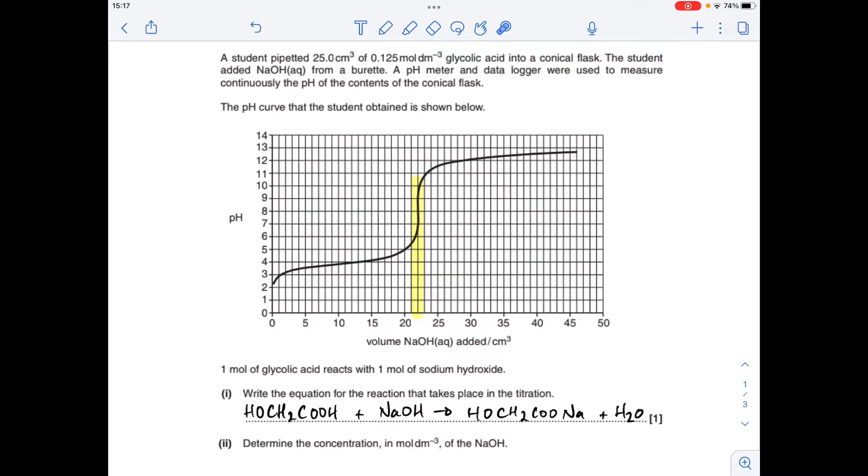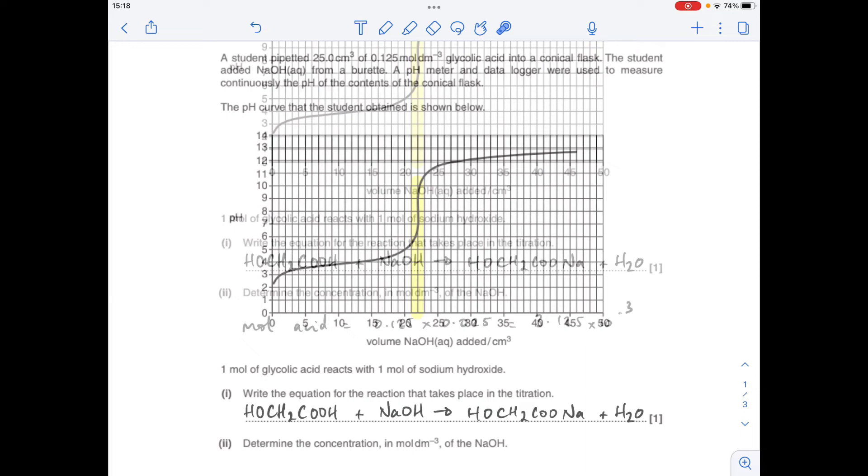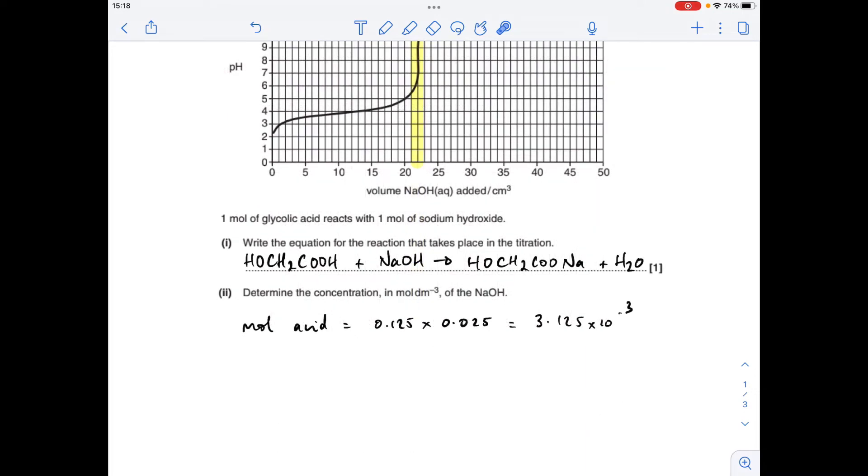Now we know that's just a straightforward titration question with a nice easy one-to-one ratio. So the moles of glycolic acid used are going to be the concentration times the volume. Remember that's got to be in decimeters cubed. So that's how many moles of glycolic acid were used. The moles of sodium hydroxide will be exactly the same because of the one-to-one ratio.